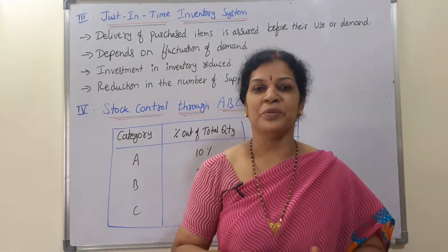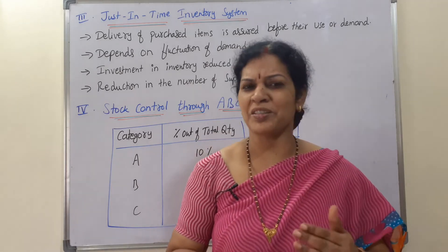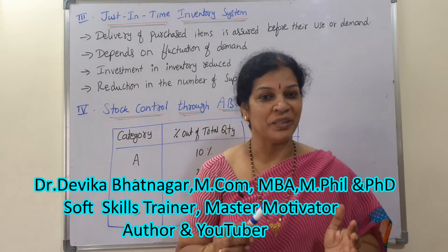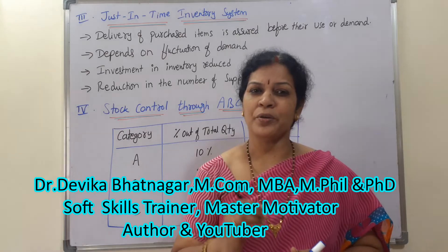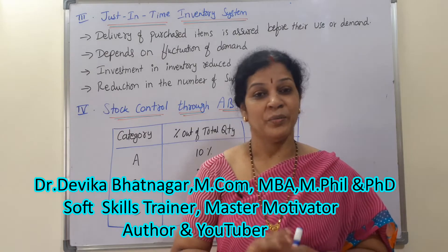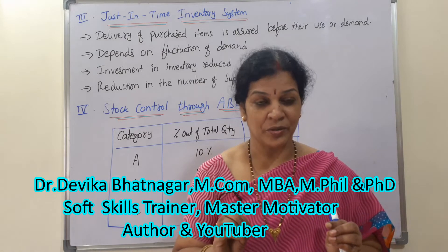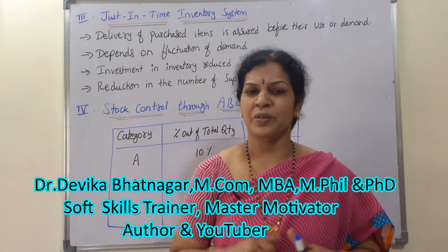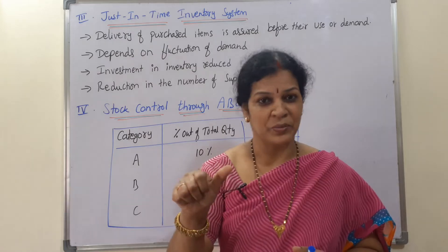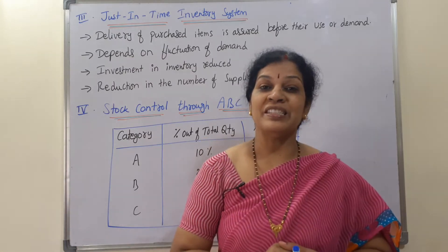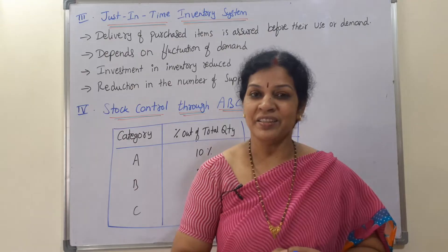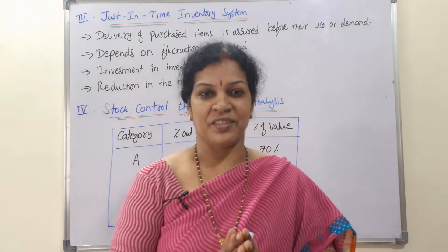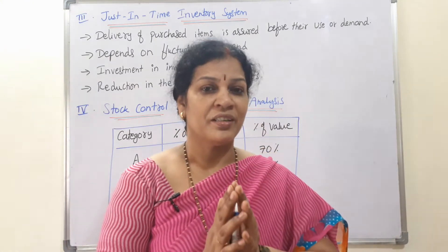Hello dear students, welcome to the Commerce and Management Academy. In cost accounting, we are discussing material management and material cost — how to control the material. We have a total of 10 methods. In the last class, the first and second methods were covered. Today we will see the JIT method — Just-In-Time — and the third is ABC analysis, to control the material.